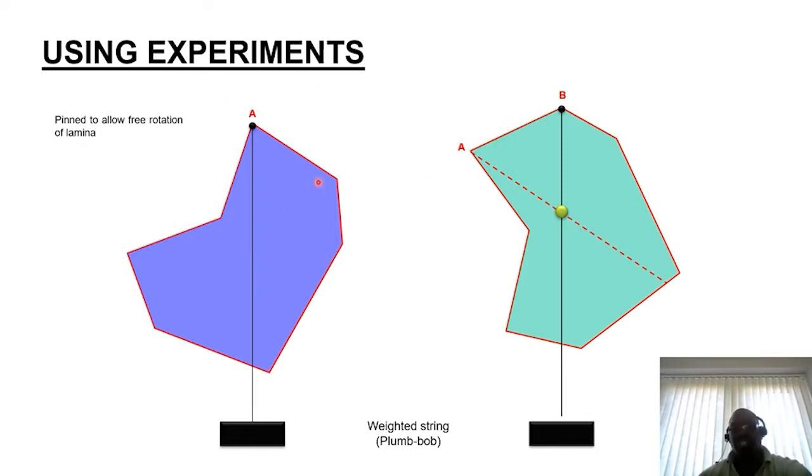You unpin the shape from A and identify any other corner, whether opposite or adjacent. You pin and effect the same concept again by letting the shape oscillate until it comes to rest. Then you attach a loaded or weighted string and trace along the string to intercept with the first bisector. Where the two lines intersect, that defines the centroid position. The coordination of the central position depends on where you've placed your reference frame to measure the distance of the centroid in terms of its x-coordinate and its y-coordinate.